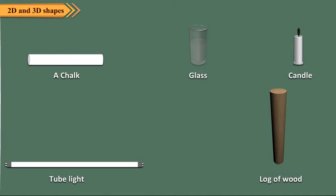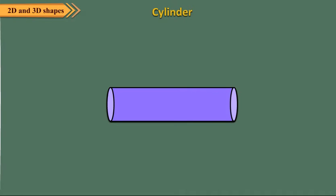Children, we have seen all the objects shown here in our daily life. All these objects have the shape of a cylinder. A cylinder has no vertices. It has two curved edges and three faces. One face of a cylinder is a curved face. Two faces, that is the top and bottom of a cylinder, are flat.